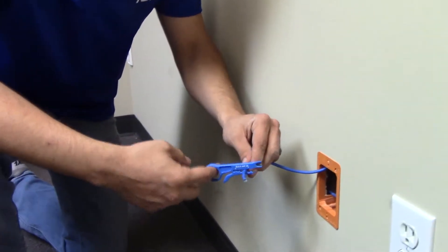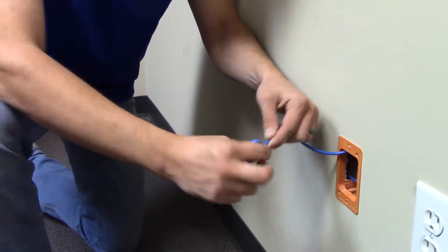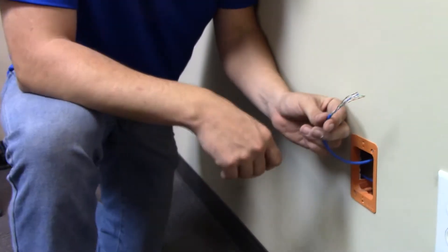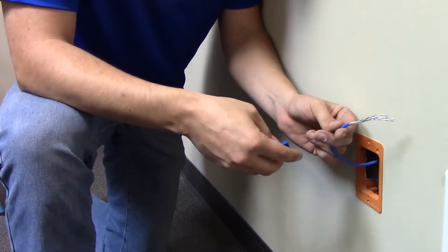So whenever we do this, we put it in there and then we twist it around to break the shield. You see the shield breaks? We can discard it to the side. So now that our cable is stripped back, we're ready to terminate.